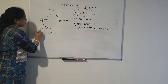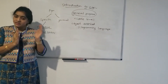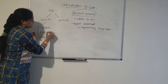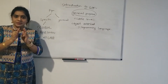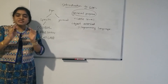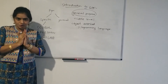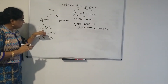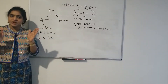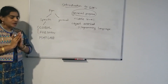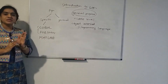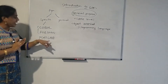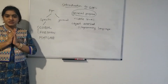All these come under specific purpose only, meaning we can develop only a specific application. COBOL means it is only for business applications — Common Business Oriented Language — only to develop business applications. Next is Fortran, which means formula translation, only for scientific applications. And MATLAB is only for mathematical applications.